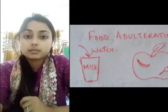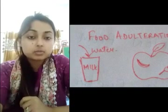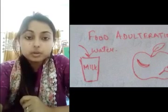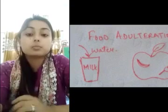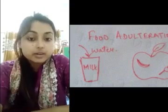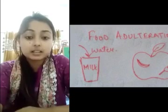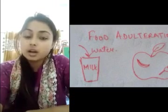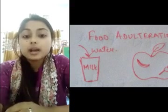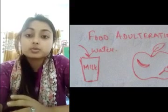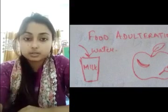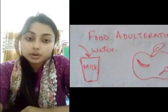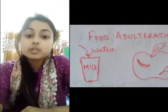More examples of food adulteration include mixing dyes and stone pieces into pulses. Now, there is a particular body to look after food adulteration — it is FSSAI, which stands for Food Safety and Standards Authority of India.